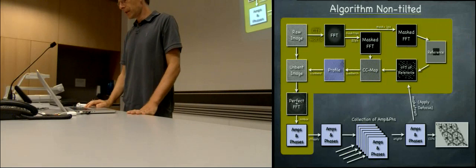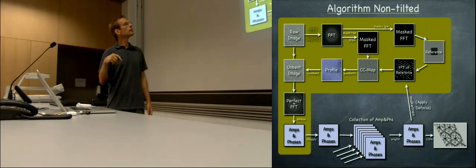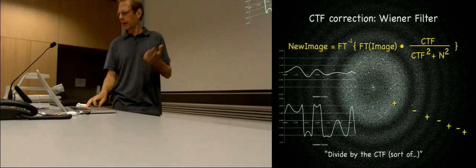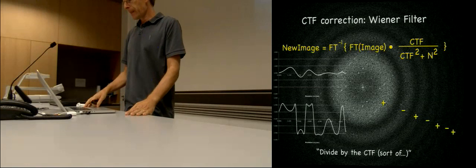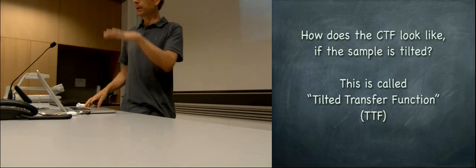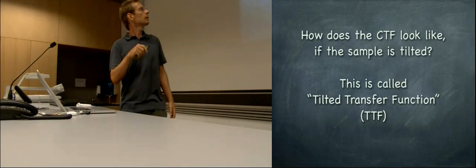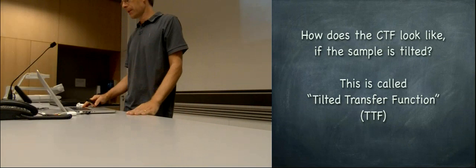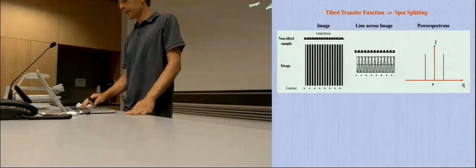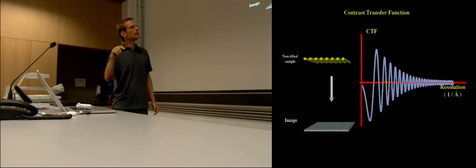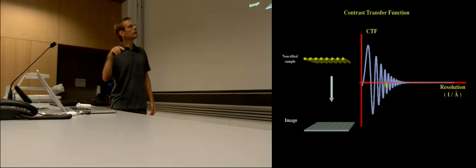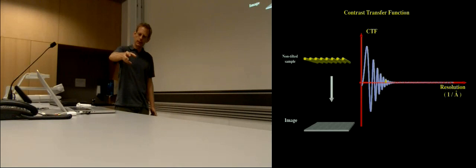On non-tilted images we've discussed the CTF correction before. Now how does the CTF look if the sample is tilted? The defocus is not a certain number — it changes: more and less defocus. This is called the tilted transfer function — the contrast transfer function for a tilted sample. If you change the defocus, your CTF changes. For one certain frequency you have positive and negative contrast depending on when you sit there slowly going through over-focus and under-focus.